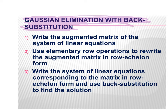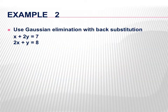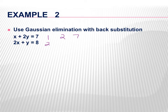Gaussian elimination with back substitution: you write the augmented matrix, use elementary row operations to rewrite it in row echelon form — diagonal of 1s, 0s only below. Then you rewrite the linear system, and it forms a triangle: top row has x, y, z; second row has y and z; third row has just z. Then you back-substitute. Let's start with two variables. The matrix would be 1, 2, 7 and 2, 1, 8. I already have a 1 in the top left, so the next step is to get a 0 where that 2 is.